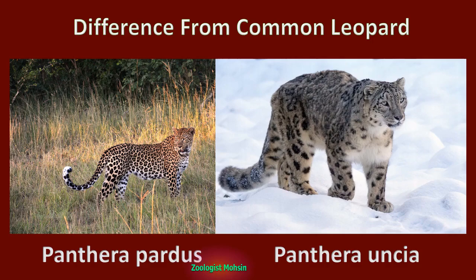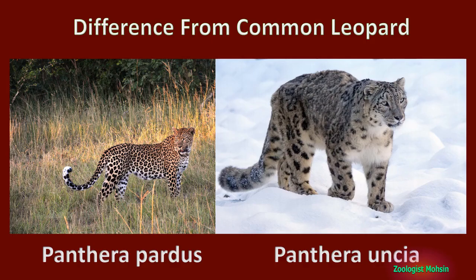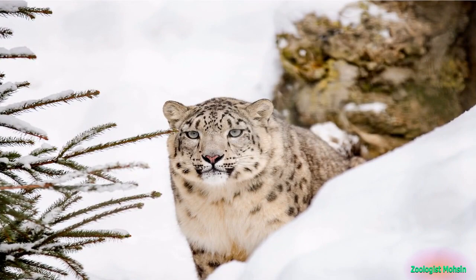This kind of fur pattern helps them to hide and camouflage in rocky habitats while preying. This pattern is not standard but unique to every individual. The tail is about one meter long, which helps them to balance on steep and rocky snow-covered terrain.